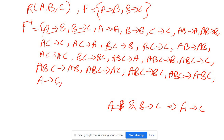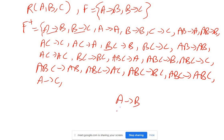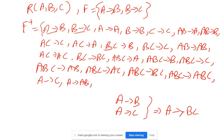Now let's check the union axiom. The union axiom states that for the same determinant, if different dependencies are derived, we can combine them. So if A→B and A→C, then we can say A determines BC. Applying union here: since A→A and A→B exist, we can get A→AB; and since A→B and A→C exist, we can get A→BC.